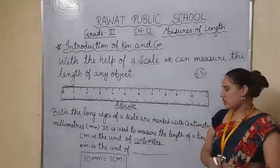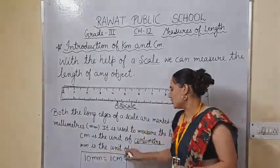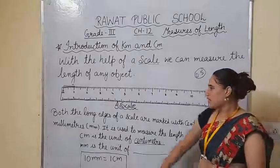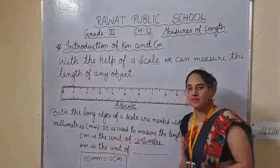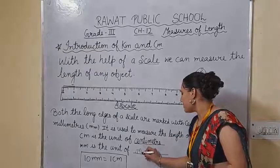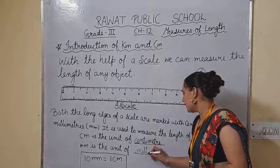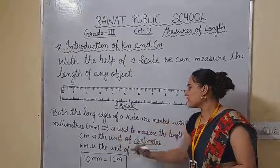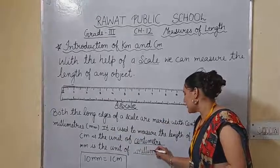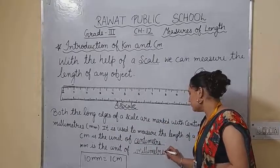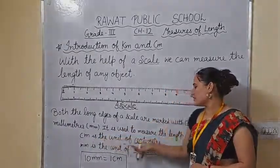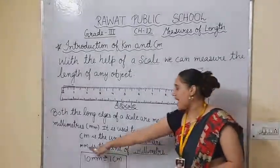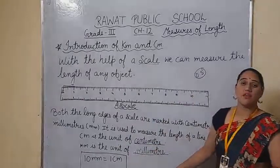Next, we talk about MM, the unit of millimeter. What do you understand with the word MM? It is called millimeter. The first M represents milli and the second M is for meter. So we say millimeter. Students, centimeter — CM — is the unit of centimeter, and MM is the unit of millimeter.